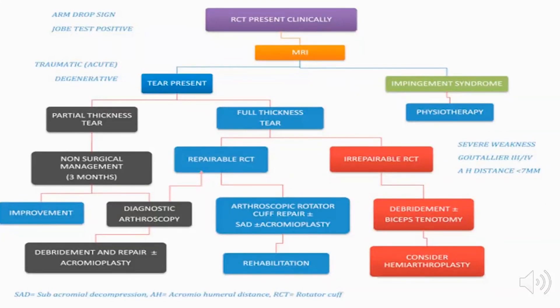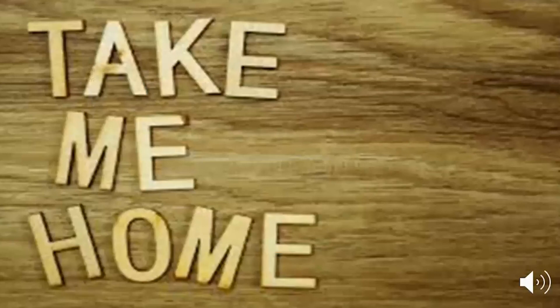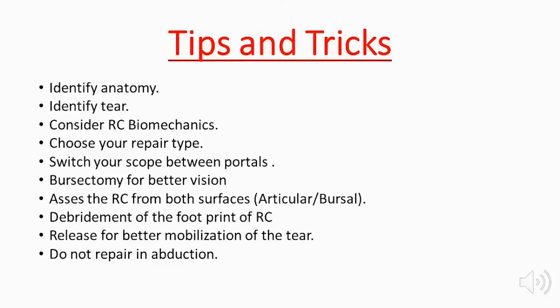If on MRI no tear is present, it is an impingement syndrome and physiotherapy is recommended. The take-home message is: identify the anatomy, identify the tear, consider the rotator cuff biomechanics, choose the repair type, and switch the scope between portals during rotator cuff repair. Perform a bursectomy for better visualization, assess the rotator cuff from both articular and bursal surfaces, debride the footprint, perform a proper release for better mobilization, and do not repair the rotator cuff in abduction.